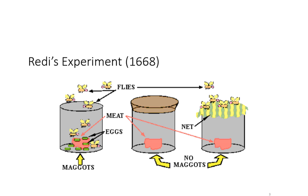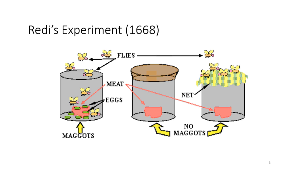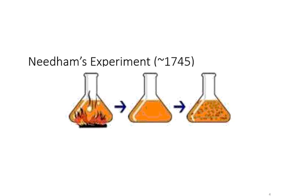Several hundred years later, a man by the name of Redi wanted to disprove spontaneous generation. He set up an experiment with a jar full of meat left out in the open. Flies landed on the meat and a few days later there were maggots. People didn't associate the flies with the maggots — they thought maggots spontaneously grew from the meat. To disprove this, he covered the jars, so flies were not allowed in, and therefore no maggots appeared. But that did not convince people.